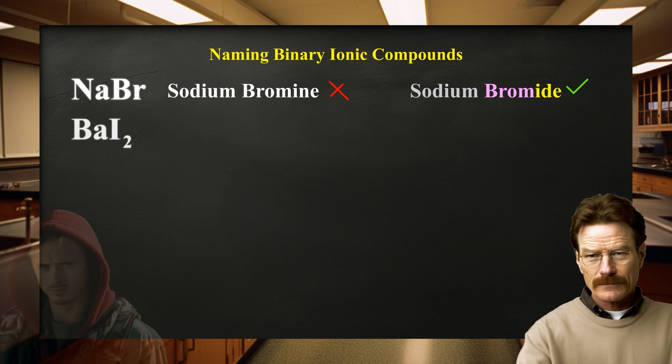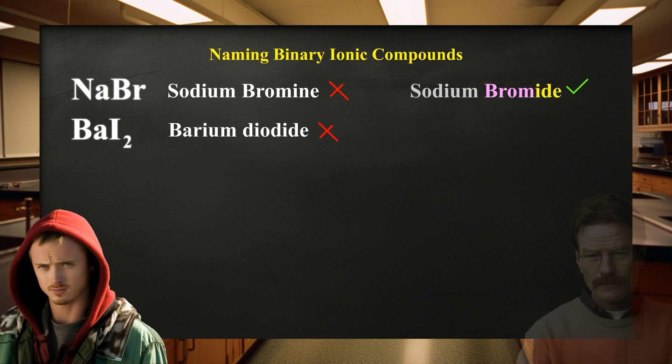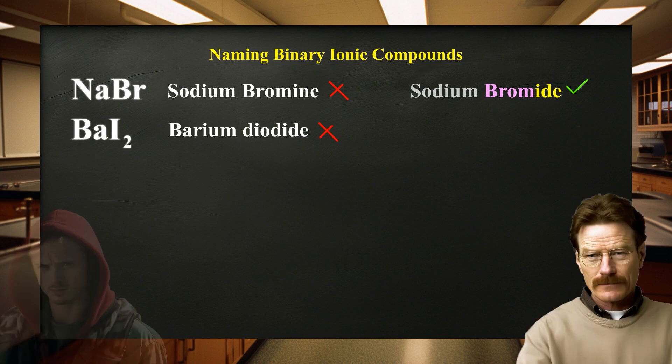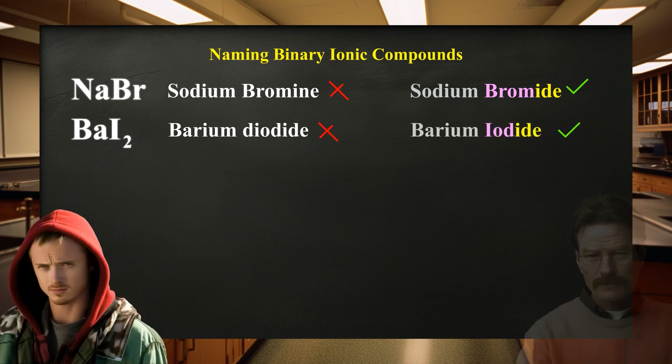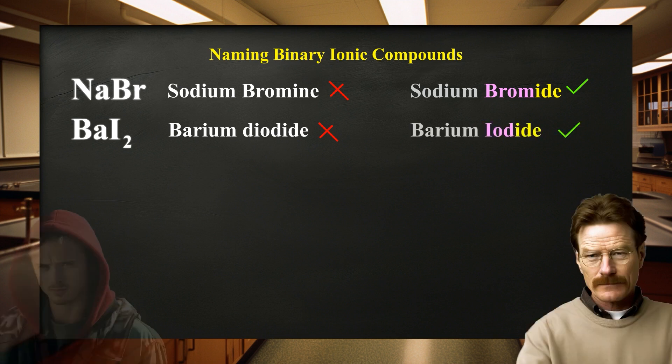Now let's try the next one. How would you name this chemical? — Is it barium diiodide? — Careful, Jesse. We are no longer naming binary covalent compounds. The Greek prefixes like di, tri, and tetra are only used for naming molecules that contain only nonmetals. — So it's just barium iodide? — Correct.